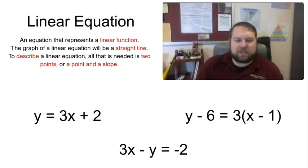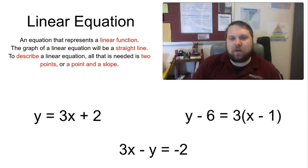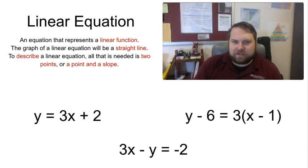Now recall that a linear equation is just an equation of a linear function. When you graph it, you're going to get a straight line, and in order to describe any kind of linear function, we always need one of the two following: we either need two points, or we need a point and a slope.